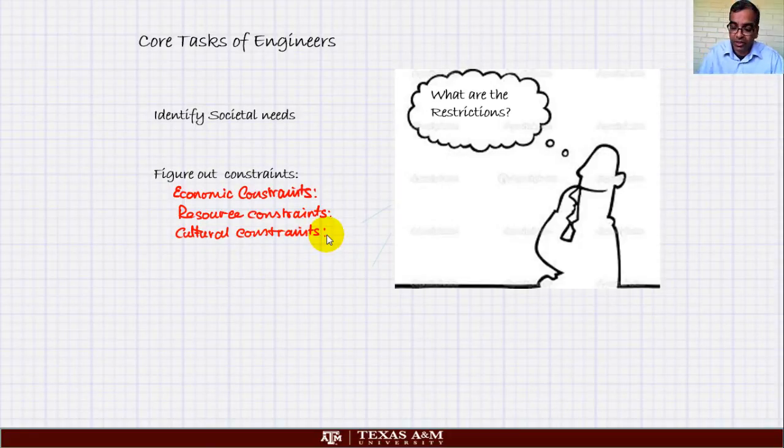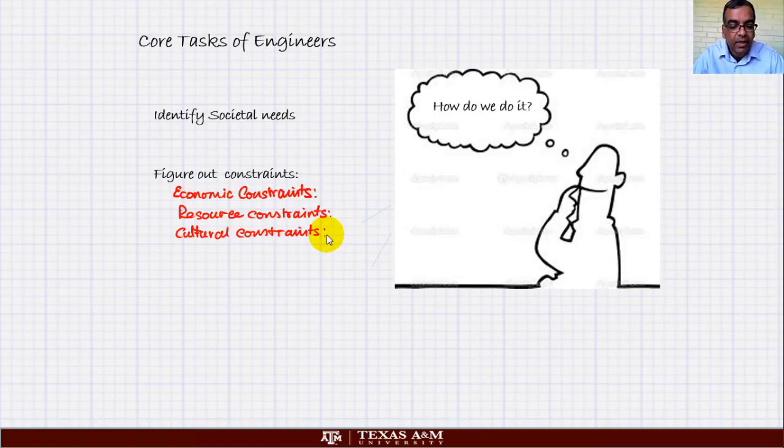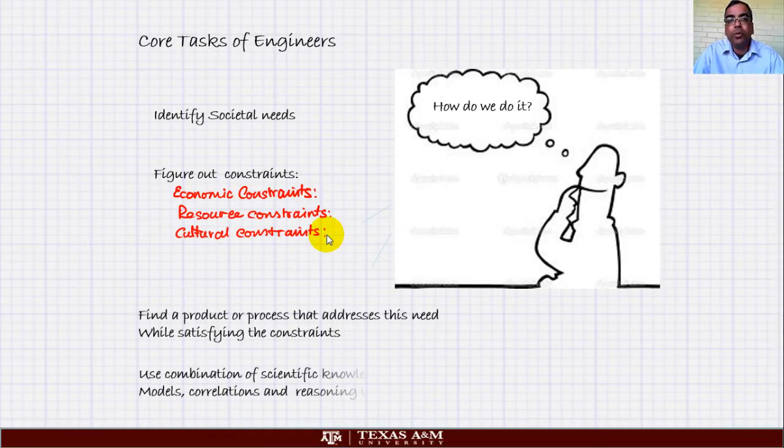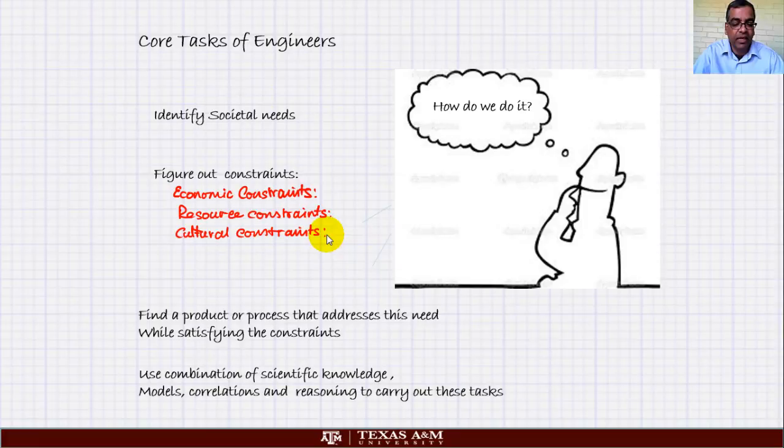Then you have to think about how do we carry out this task? For this you have to find a product or process that addresses this need while satisfying the constraint. You have identified the need, you know the constraint, so now it's up to engineers to find out products or processes to satisfy this. In order to do this you have to use your knowledge of physics, mathematics, experimentation, correlations, experience, all kinds of things to figure this out. This is the core task of an engineer.